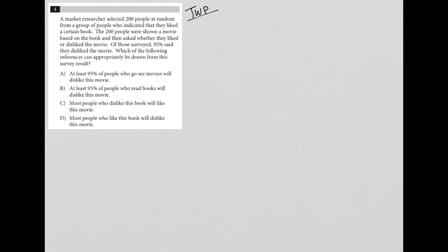This question says a market researcher selected 200 people at random from a group of people who indicated that they liked a certain book. I'm going to start translating what that sentence means. To me, there was a group of people who liked the book, and out of those people, we chose 200 people at random.